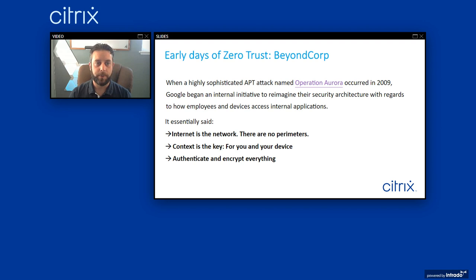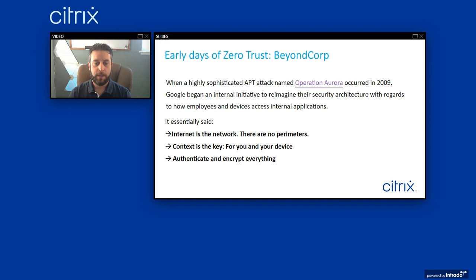After that attack, Google decided to reevaluate the way IT security was done internally and came up with three main points. First, there is no internal network anymore — everything on the internet is part of our network. If everything on the internet is part of our network, we control access to real internal data through context, providing a contextual response based on who you are and what device you're coming from. Alongside that, we need to make sure every single action, every request for data, and every user is authenticated every step of the way, and all data is encrypted in flight and at rest.